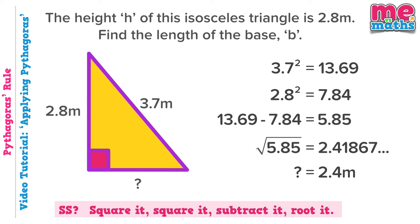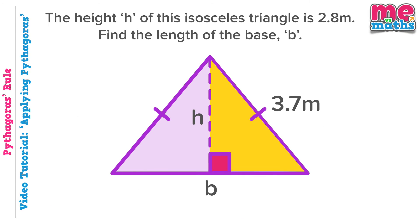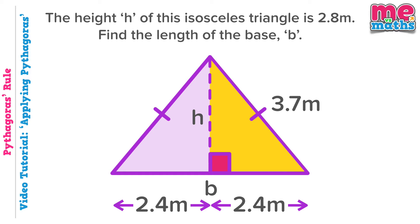But we're not quite done — make sure we answer the question. All we've done so far is find this length here. We were asked originally to find the length of the base B. So we need the total length of the whole base. We need two of these 2.4 metre lengths to find the total length for B, which is 4.8 metres.